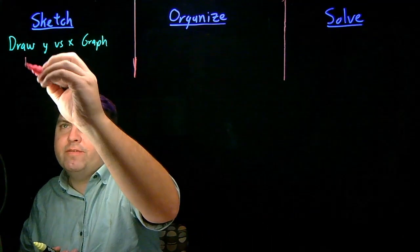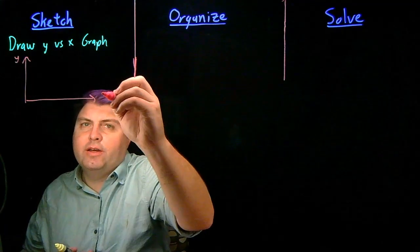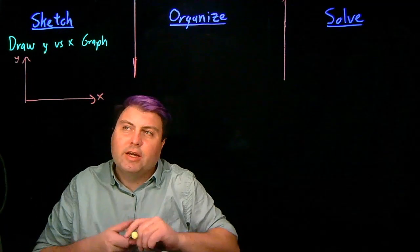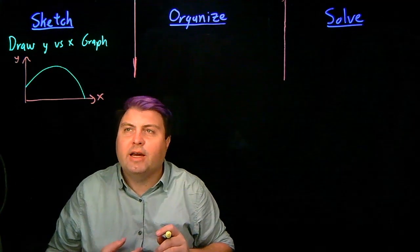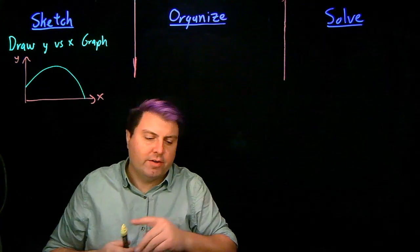So we have then, in this case, y and x. If it's a projectile motion question, it very often will be something of a parabola or something like that, just to show off what's going on here.